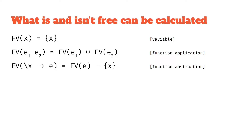Using set notation: if we have a variable x, it's not been bound by anything, so we say the free variables FV(x) is just the set containing x. If we've got a function application, nothing really happens to the free variables — we've got two different expressions, so we union those two sets together. Those are our free variables, because we're not changing them, we're just adding the sets together.